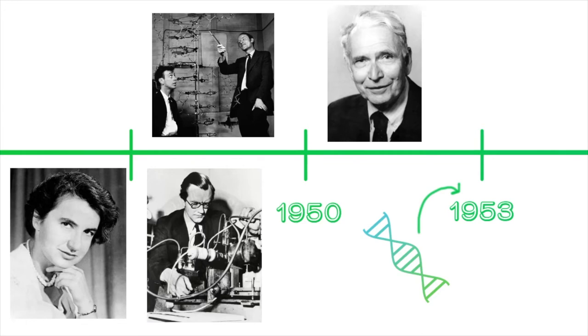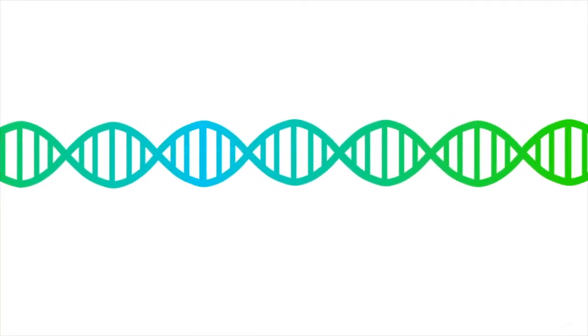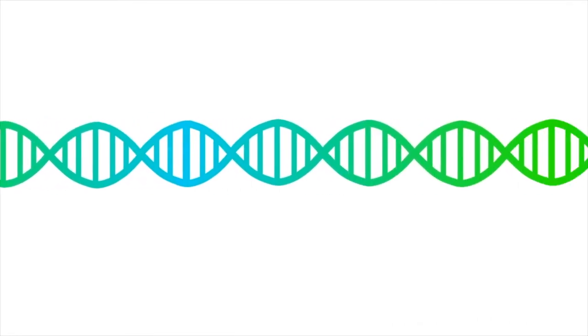Crick later went on to outline what he called the central dogma of biology as early as 1958. The central dogma explains the flow of genetic information within a cell, and it boils down to two steps: transcription and translation.